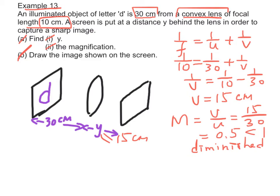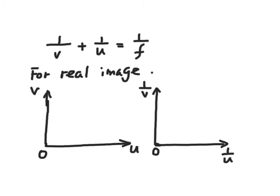Part B: Since the image is real, diminished, and inverted, the image can be shown on a screen.